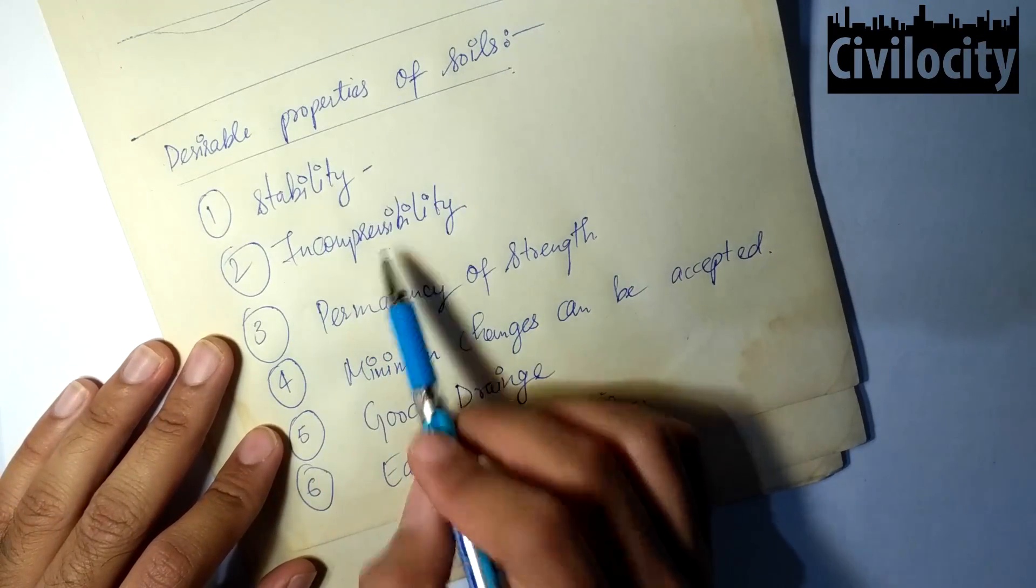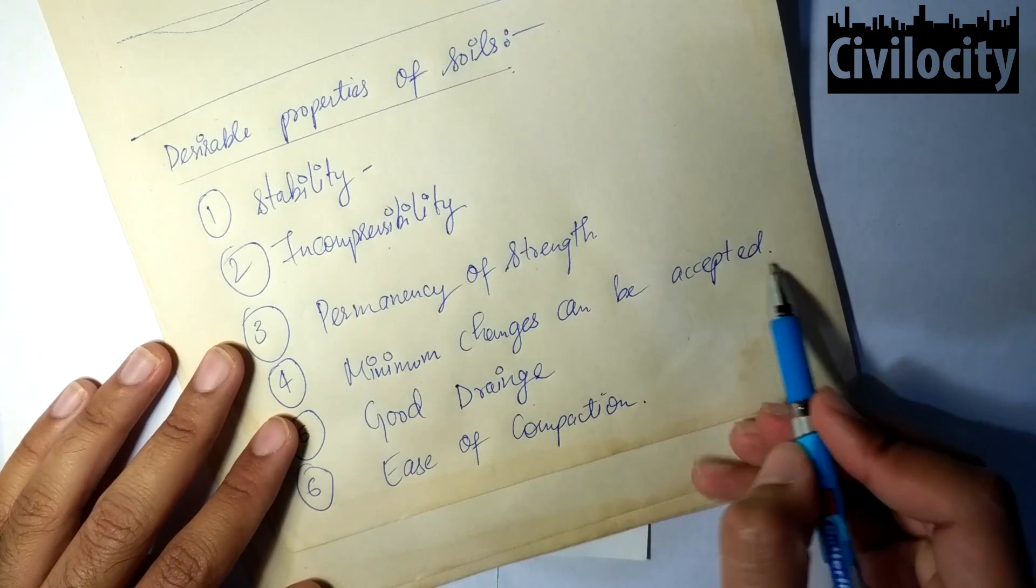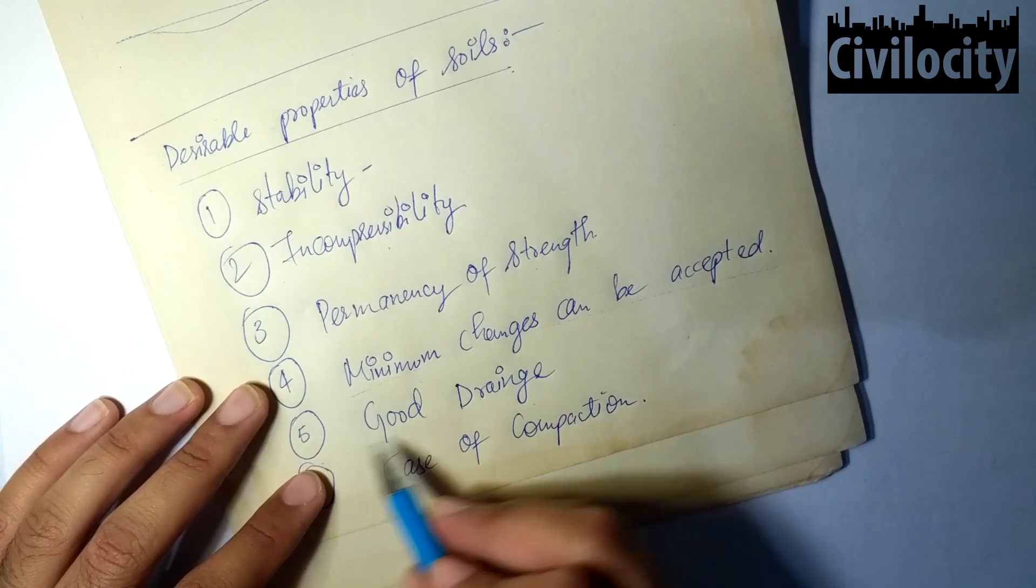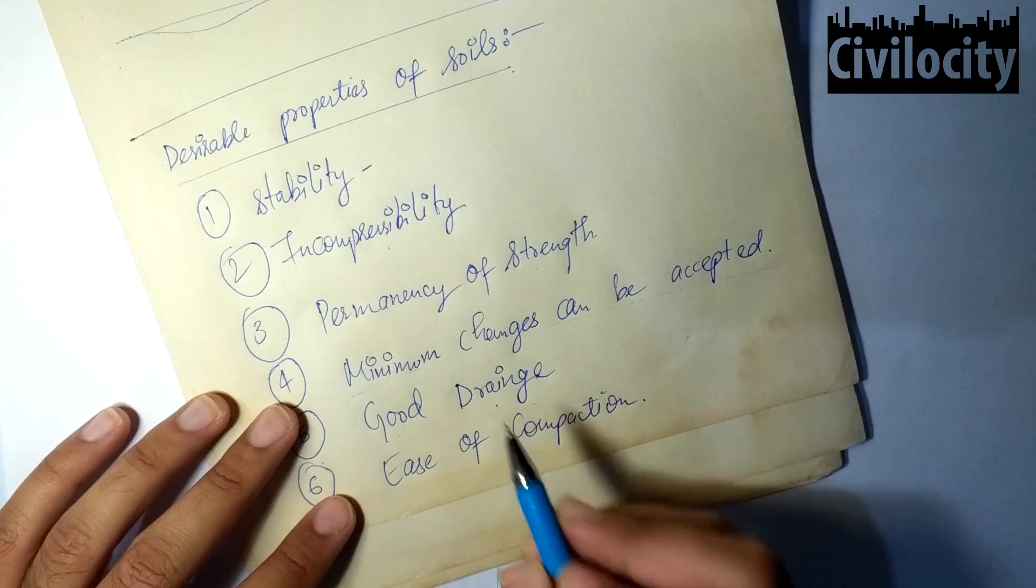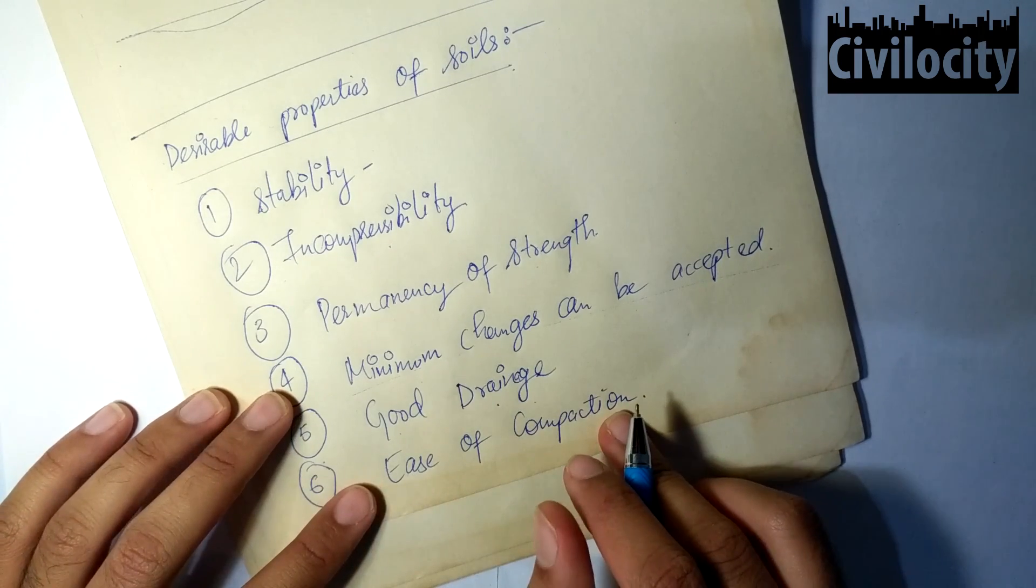The first one is stability, second is incompressibility, third is permanency of strength, fourth is minimum changes can be accepted under adverse conditions, fifth is good drainage, and the sixth one is ease of compaction.